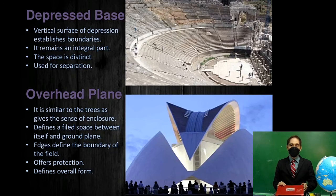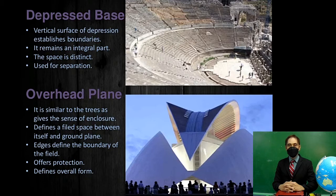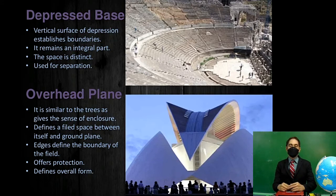A depressed base plane — like a Roman amphitheater — has a vertical surface of the depression that establishes boundaries, yet remains an integral part of the surrounding space. The space is distinct and used for separation. The overhead plane defines the space between itself and the ground plane, giving us a sense of enclosure.